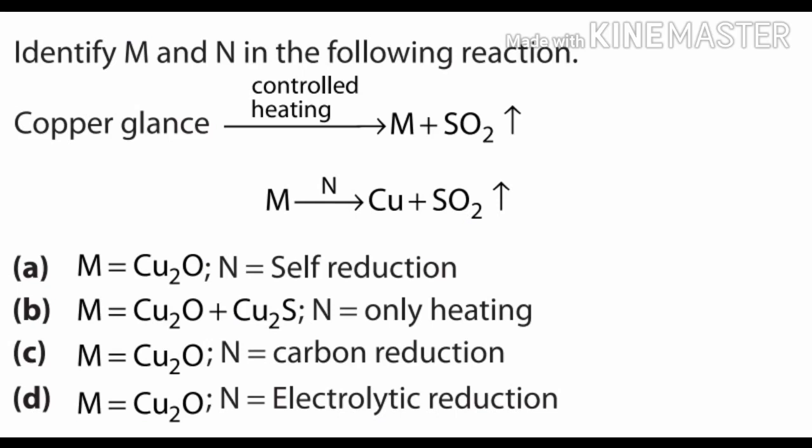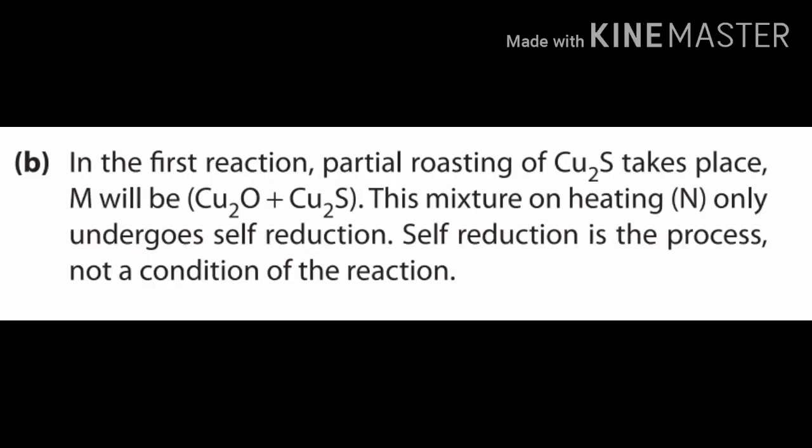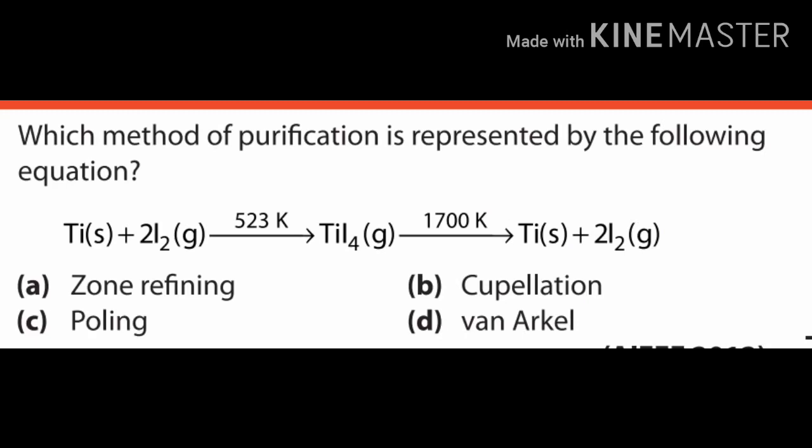Answer is B. Copper glance is Cu₂S. M will be a mixture of CuO and Cu₂S — so it is not one element. N undergoes self-reduction, meaning we need not add anything; it is auto-reduction. Cuprous sulfide itself reduces cuprous oxide to copper without adding any reducing agent. This is called self-reduction.